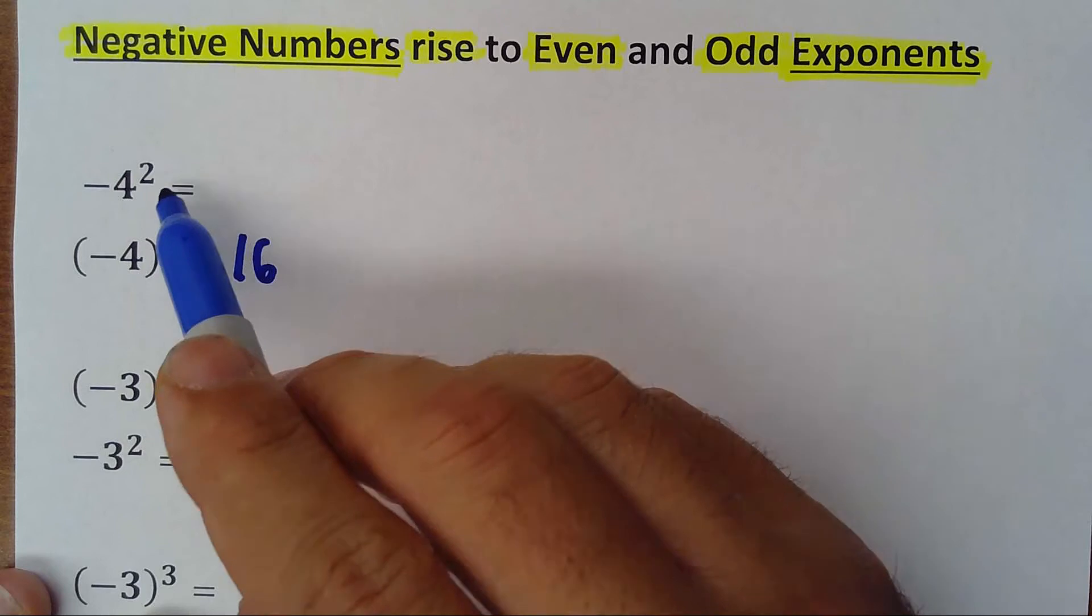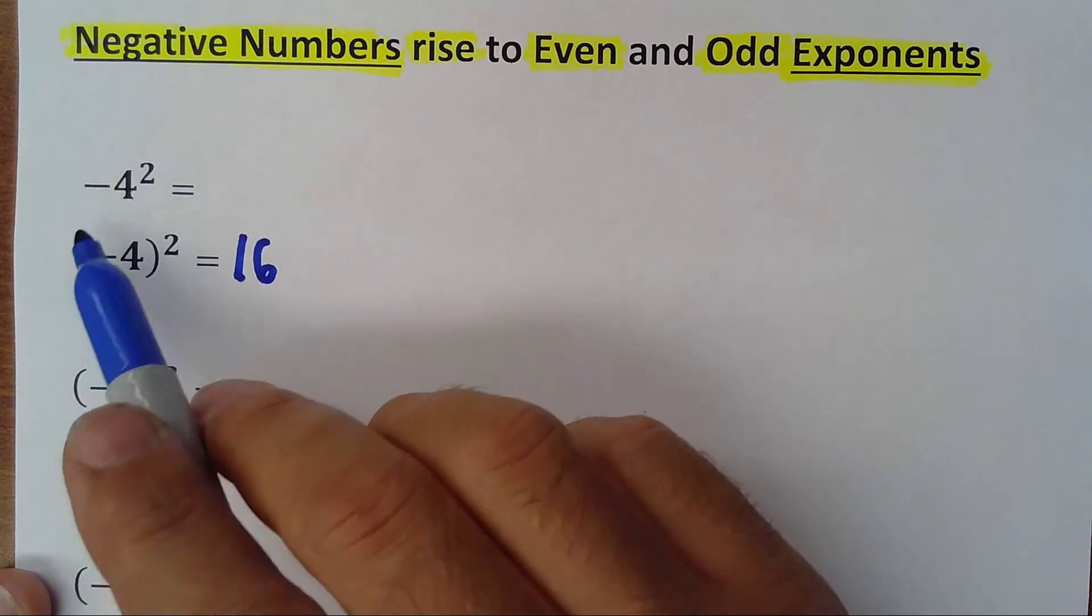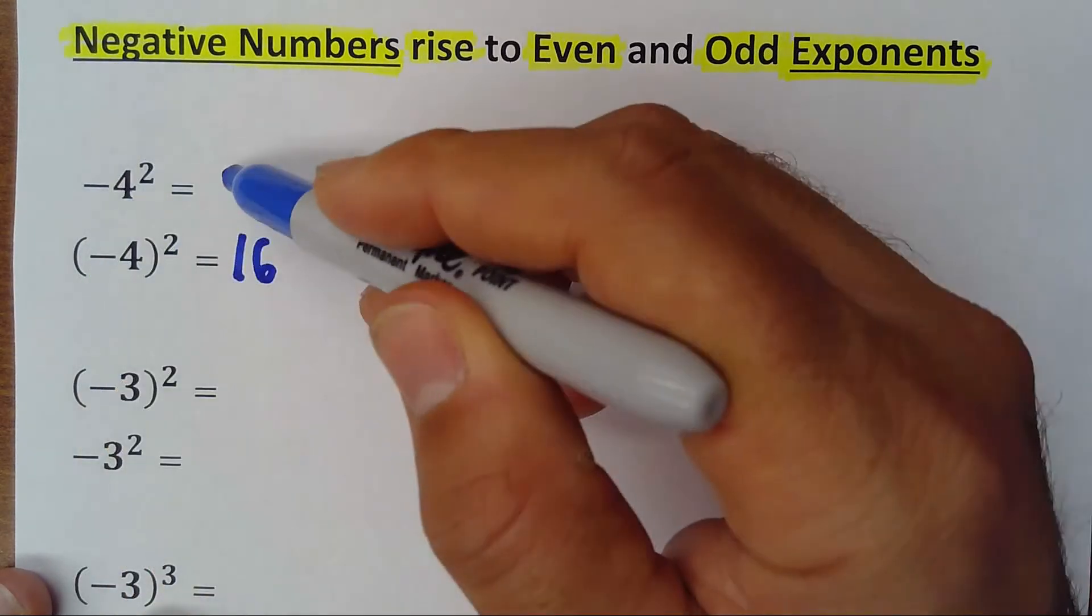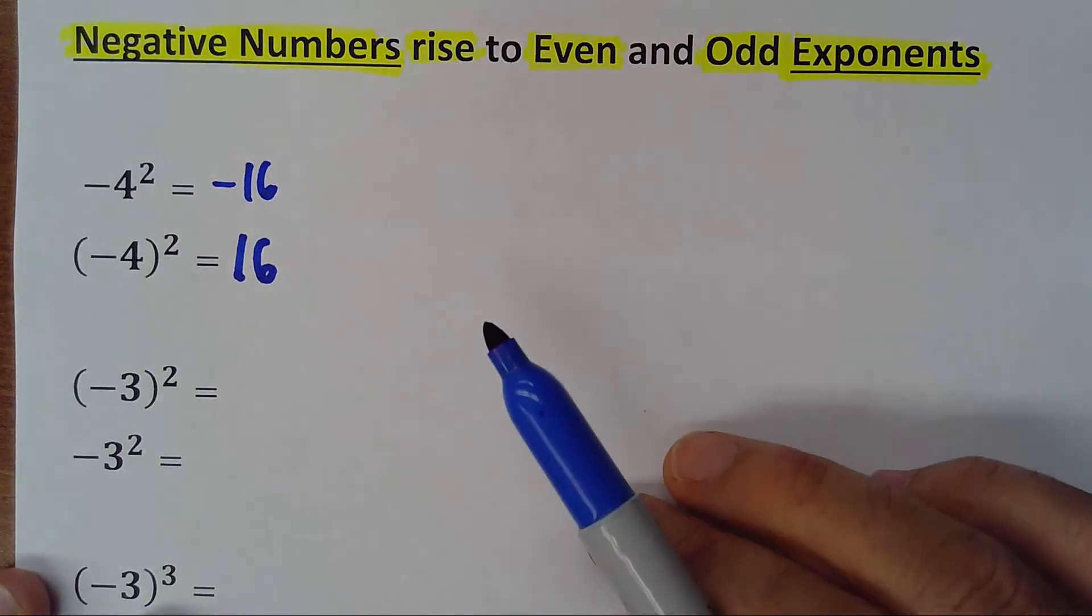And the first one, minus 4 with no parenthesis squared, that would be negative 16. I'm going to explain why.